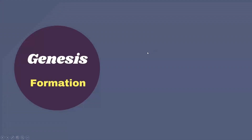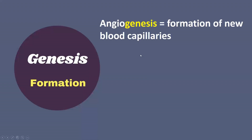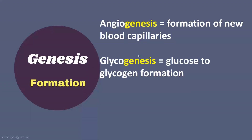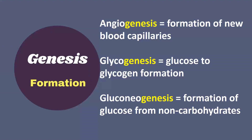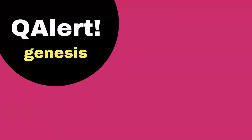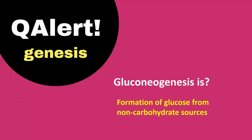The next suffix is genesis, which refers to formation. Examples: angiogenesis is the formation of new blood capillaries, glycogenesis is the formation of glycogen from glucose, gluconeogenesis is the formation of glucose from non-carbohydrate sources. Question alert: gluconeogenesis is formation of glucose from non-carbohydrate sources.